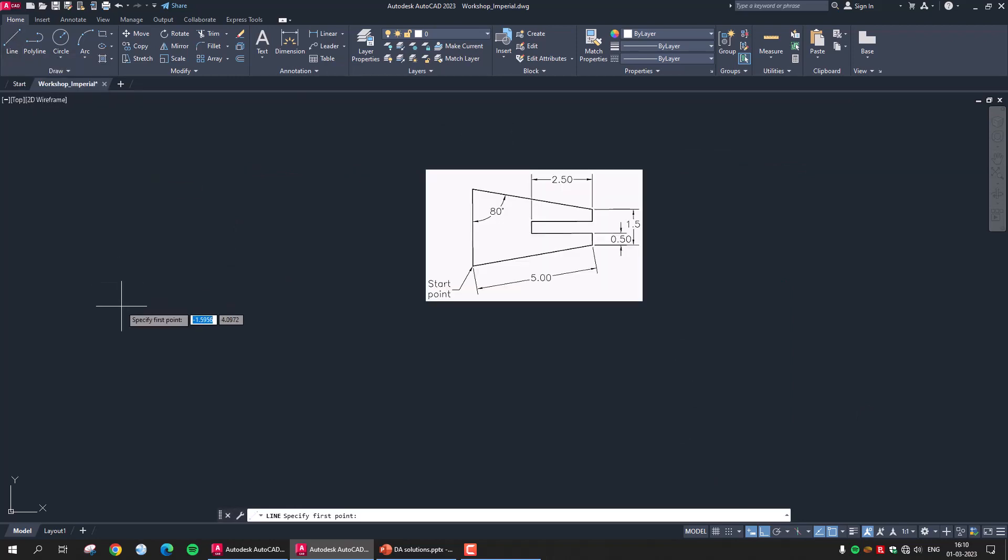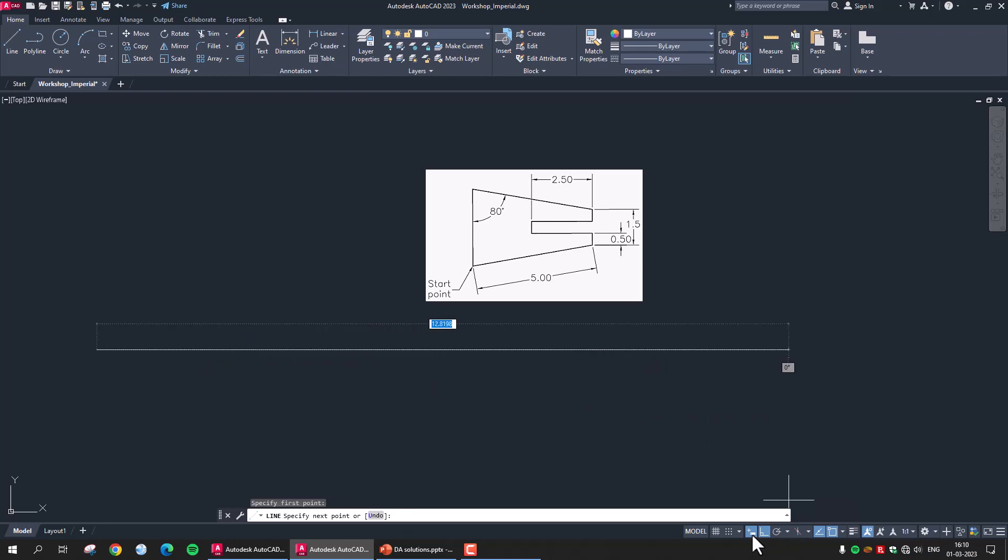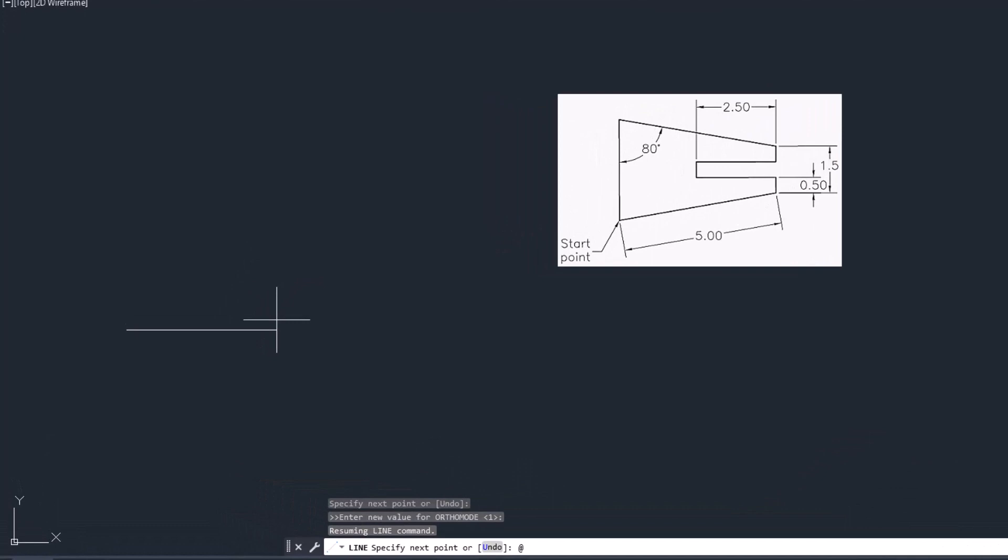Start the line command and place your first point anywhere. Now, to use Cartesian coordinate method system or the polar method, I will turn off my dynamic dimension input mode. Let's type 5 at the rate 5 less than 10 degree. Just pay very close attention to the command line and press enter.